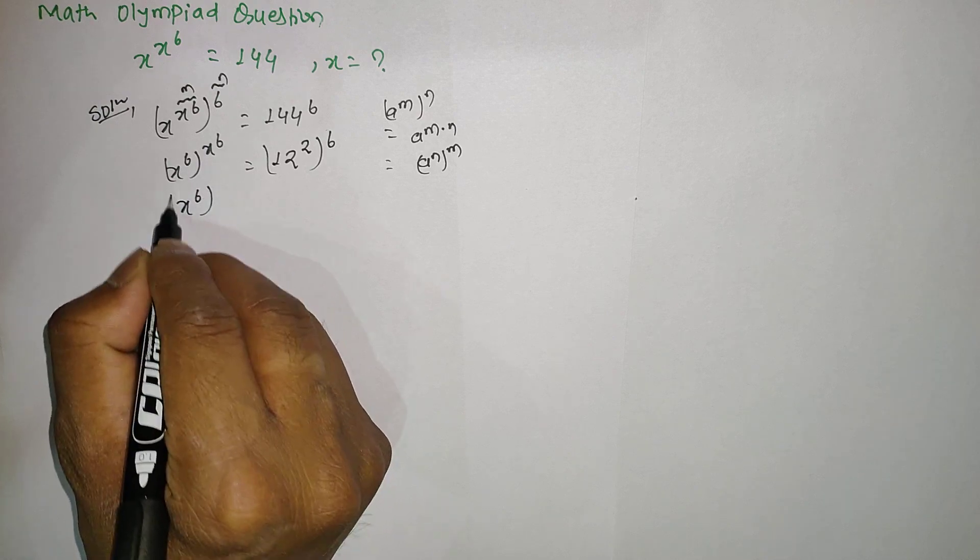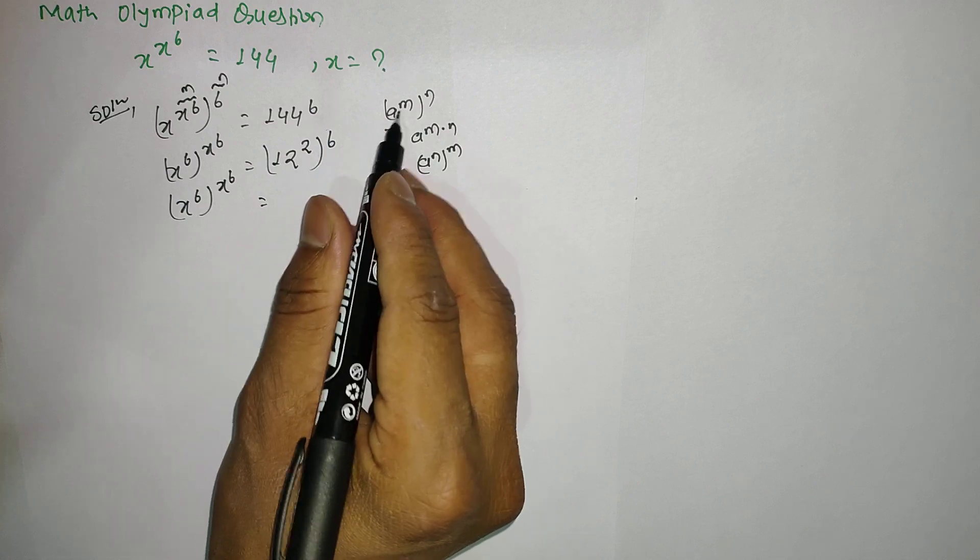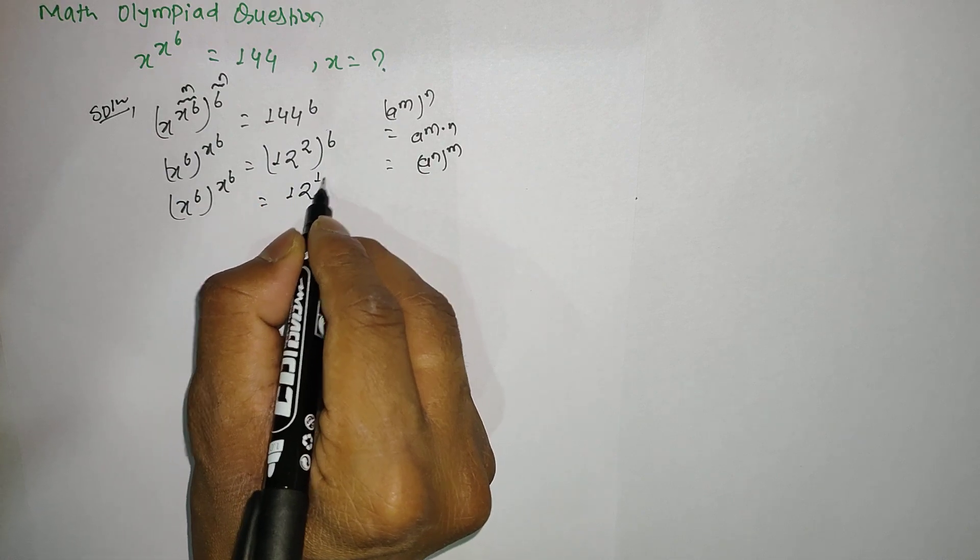Here x power 6 to the power x power 6 equals, according to this rule, we can multiply this power: 12 power 2 times 6, which is 12 to the power 12.